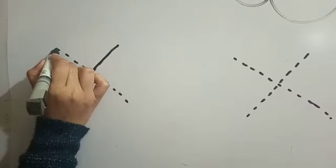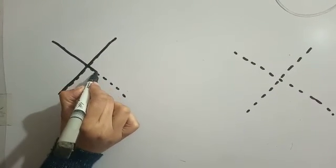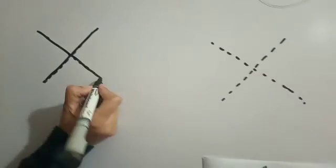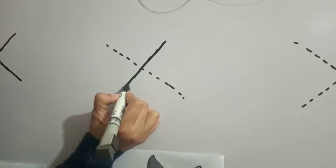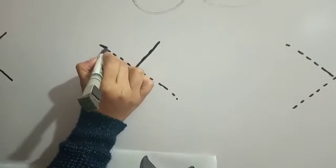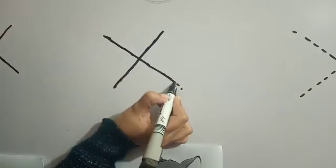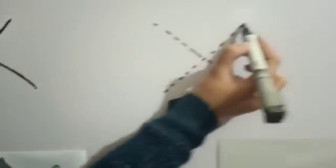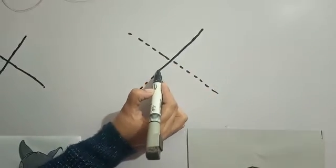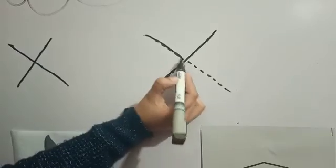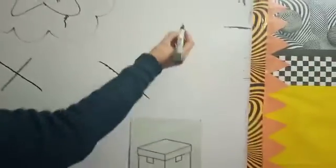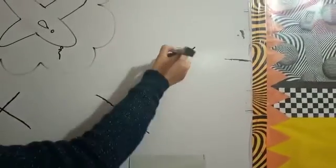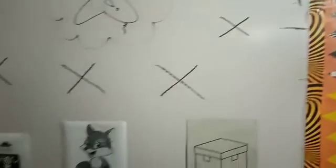Then, you have to make a slant line again. Make a slant line. Next time, start from your first door. Slowly, slowly join your doors. Come down. Again your slant line. Make a slant line. You have to write.